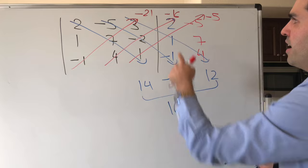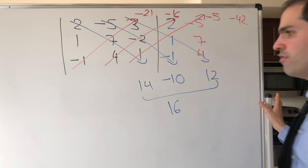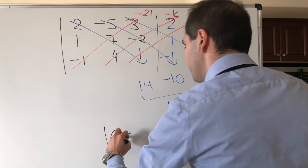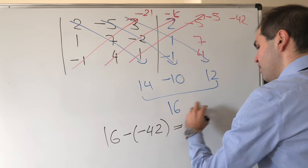And then you have 16 and minus 42, so 16 minus minus 42, that gives you 58, which is the answer.